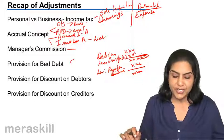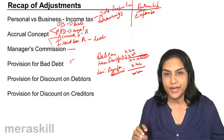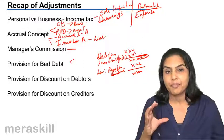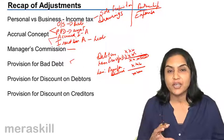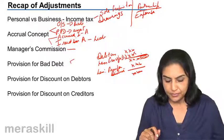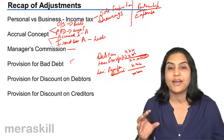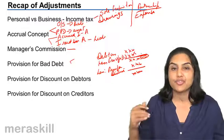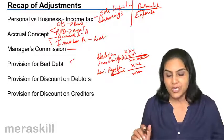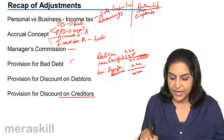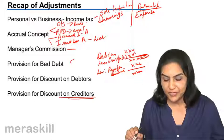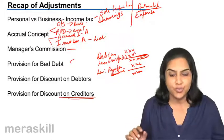We also discussed provision for discount on creditors, which is actually making a provision or acknowledging a receipt which is only expected in the future. It is the only provision which would have a debit balance. The entry is to credit profit and loss account and debit provision for discount on creditors. It violates the concept of conservatism and is hardly used in practice.